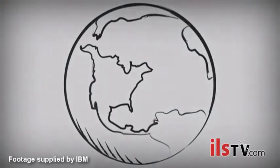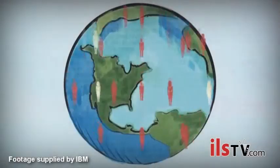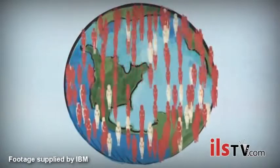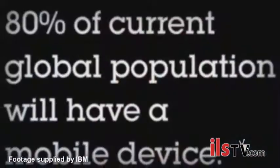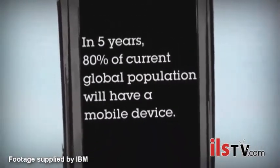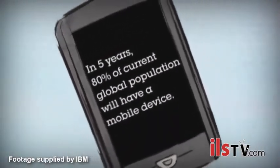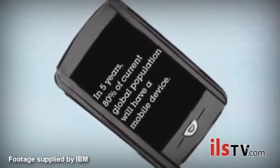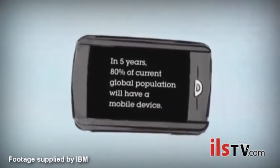There are seven billion people inhabiting the world today. And in five years, 80% of the current global population will have a mobile device. It's cheaper to have a cell phone than open a bank account or buy a laptop. And because of this, communities are able to achieve much more than they had before.